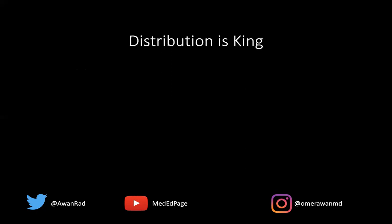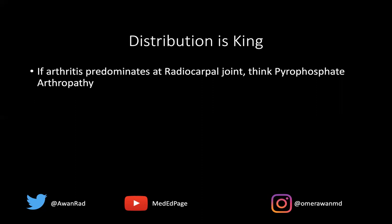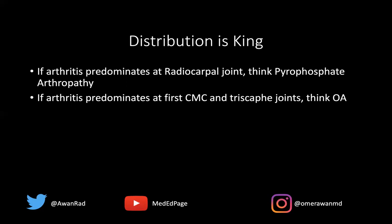Whenever you have an arthritis case, the distribution is always key. In our case, because the degenerative changes of subchondral sclerosis, joint space loss, osteophytes, and subchondral cystic change predominate at the radiocarpal joint, this is pyrophosphate arthropathy. DJD or osteoarthritis would be very unusual at the radiocarpal joint unless it's a secondary cause like post-traumatic osteoarthritis. If the arthritis predominates in the first CMC and triscaphy joints, the answer is osteoarthritis, even if chondrocalcinosis is present in the TFCC or lunotriquetral ligament, because chondrocalcinosis can occur in osteoarthritis.